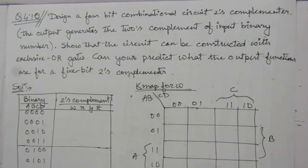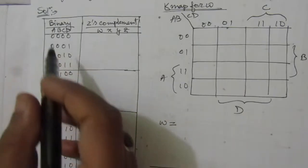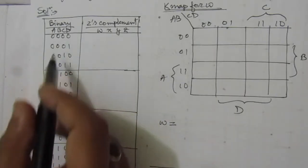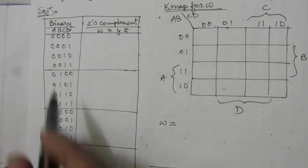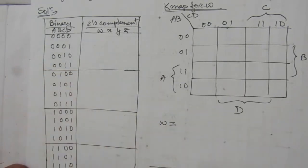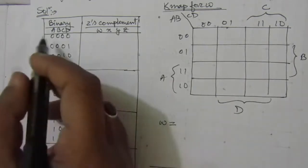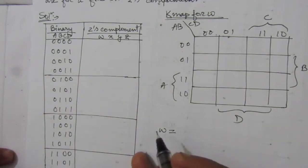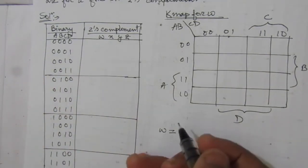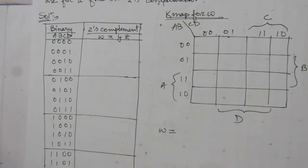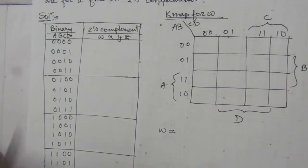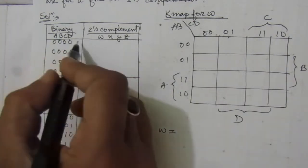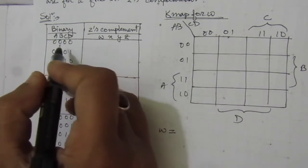Now let us solve this problem. I have written here 4-bit binary numbers starting from 0 to 15 — that is, from 0000 to 1111. Now let us find out the two's complement of these given binary numbers.